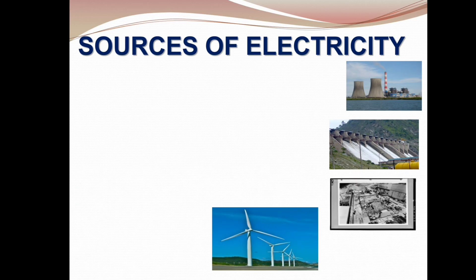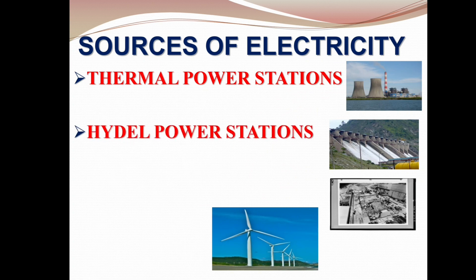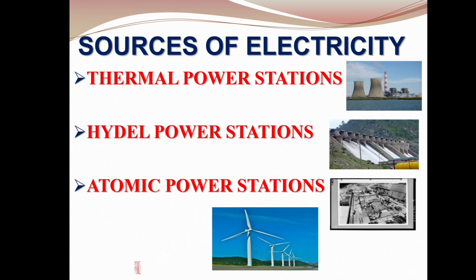The sources of electricity are thermal power stations, hydel power stations, atomic power stations, and windmills. Electricity is the presence and flow of electric charge. Electricity is a form of energy that we get when we convert other forms of energies like thermal energy, kinetic energy, solar energy, chemical energy and so on.